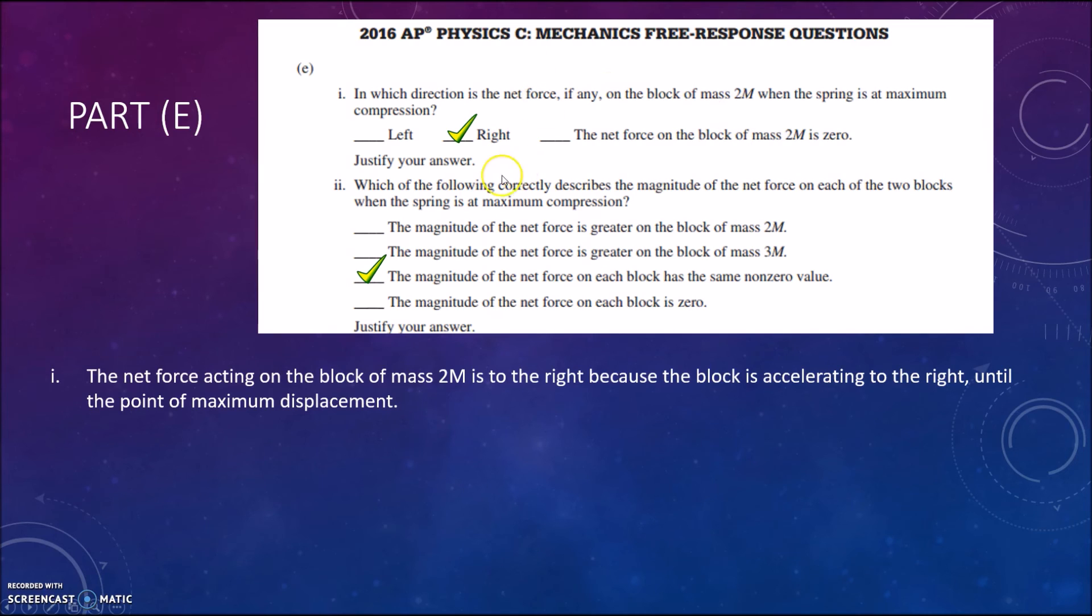For part 2 in part e we have which of the following correctly describes the magnitude of the net force on each of the two blocks when the spring is at maximum compression. Now for this I would argue that the magnitude of the net force on each block has the same non-zero value and the reason is because the blocks are assumed to be perfectly stuck together so they act as one system and the spring only experiences one force compressing it, so therefore it only gives one equal force to both of the blocks regardless of their mass just because they're combined as one system.